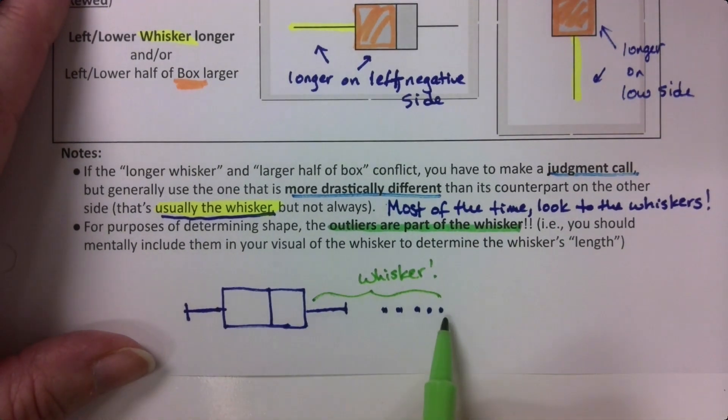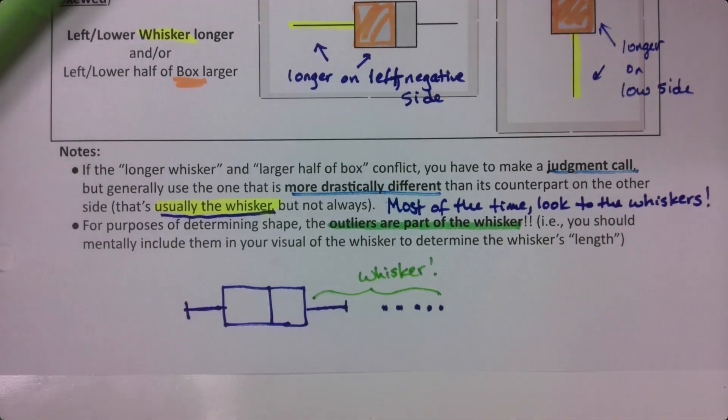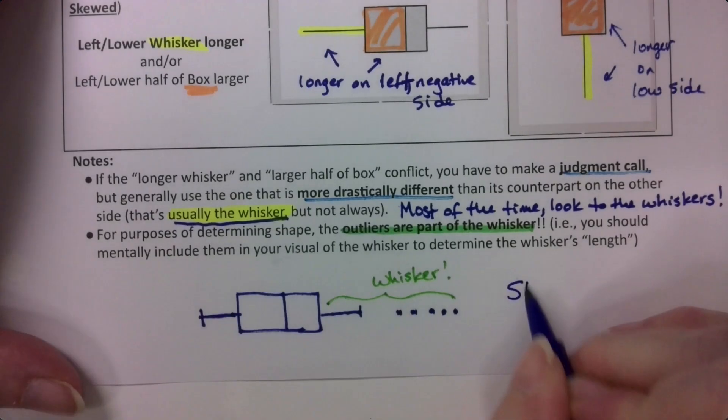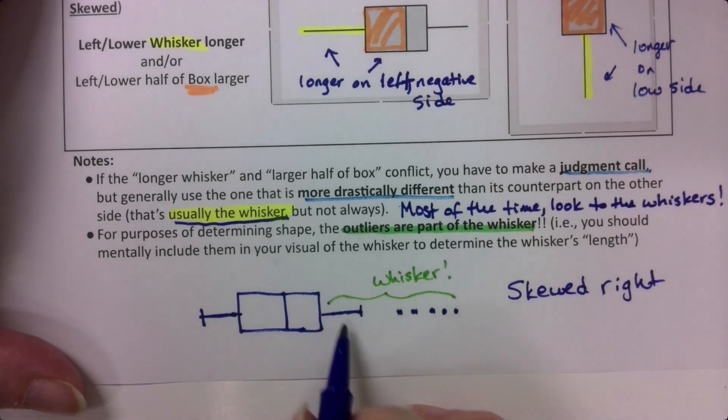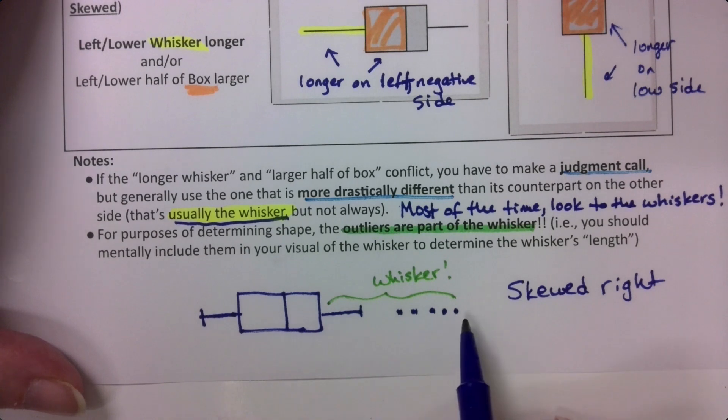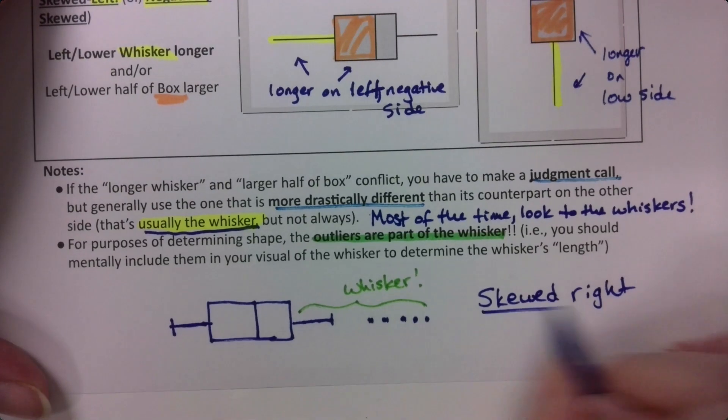So even though the box is a little bit bigger on the left, that whisker is way more dramatic. So this is skewed right. Not because of that little bitty whisker there, but because the whisker is actually all the way to the end of the dots. Skewed right.